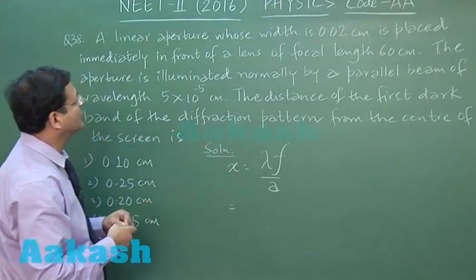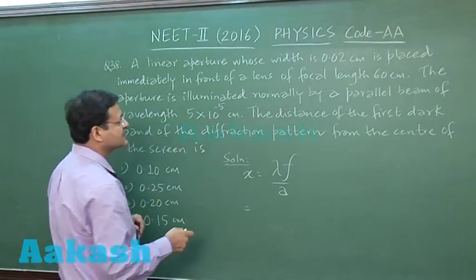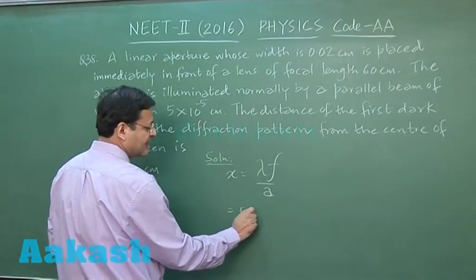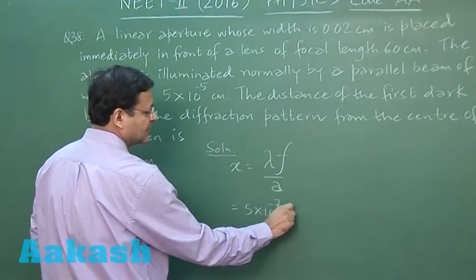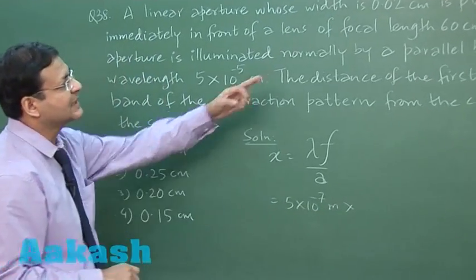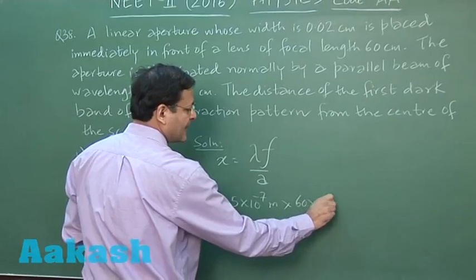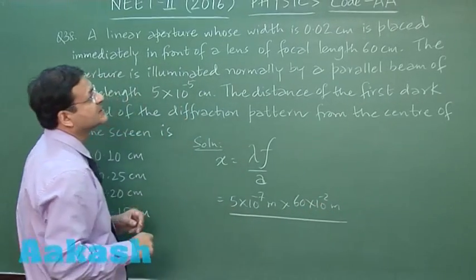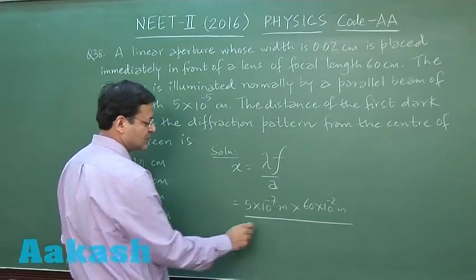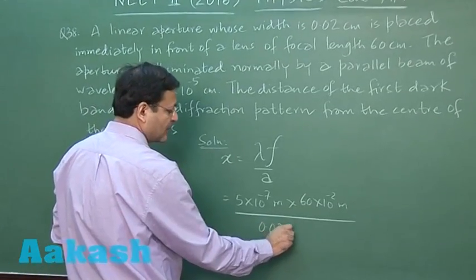Lambda has been given to be equal to 5 into 10 power minus 5 centimeter, so I can write it as 5 into 10 power minus 7 meter. The focal length is 60 centimeter, so I am writing 60 into 10 power minus 2 meter. And this aperture width is given 0.02 centimeter, so this is 0.02 into 10 power minus 2 meter.